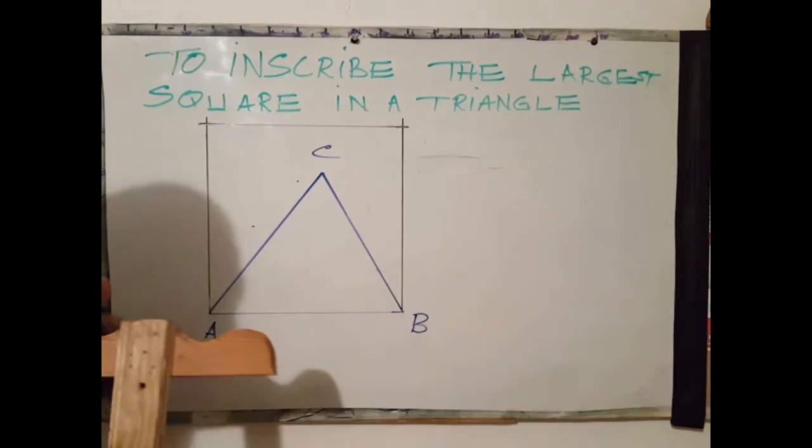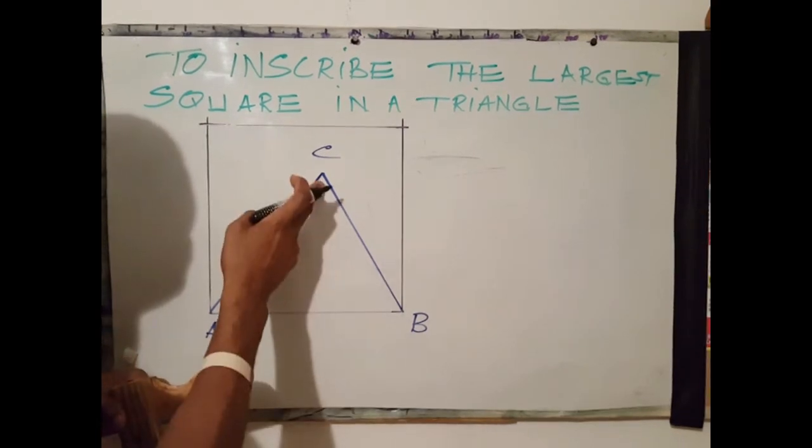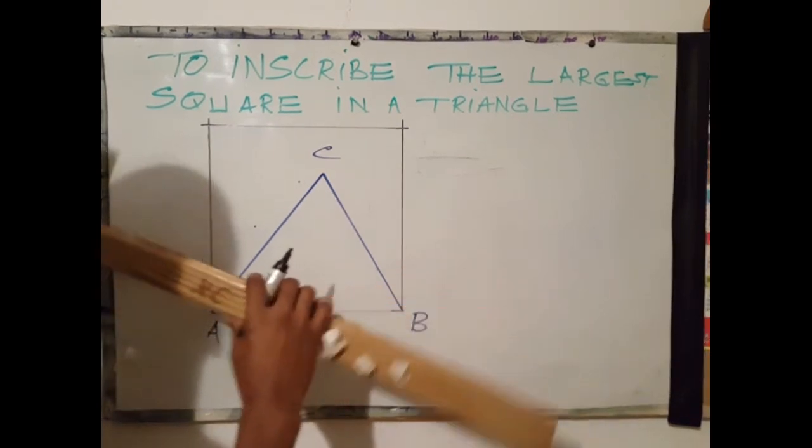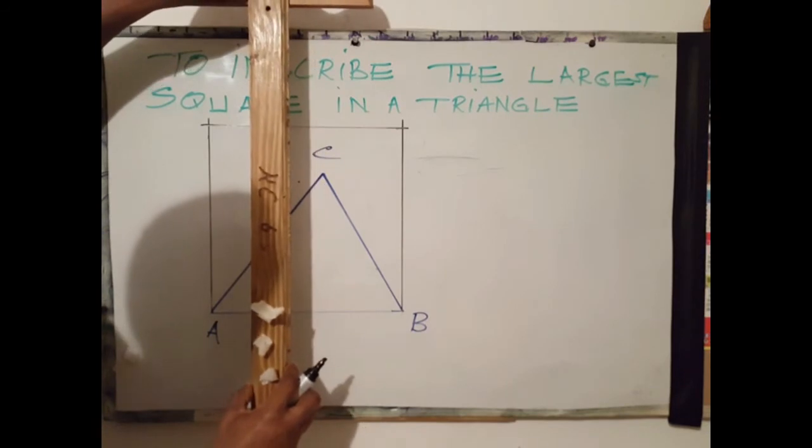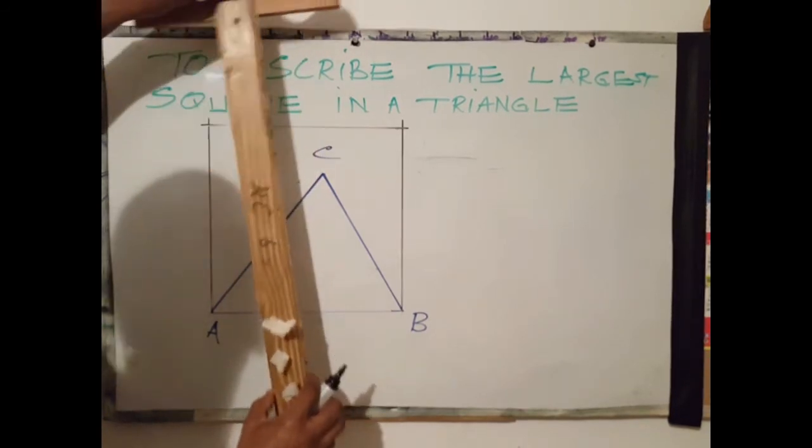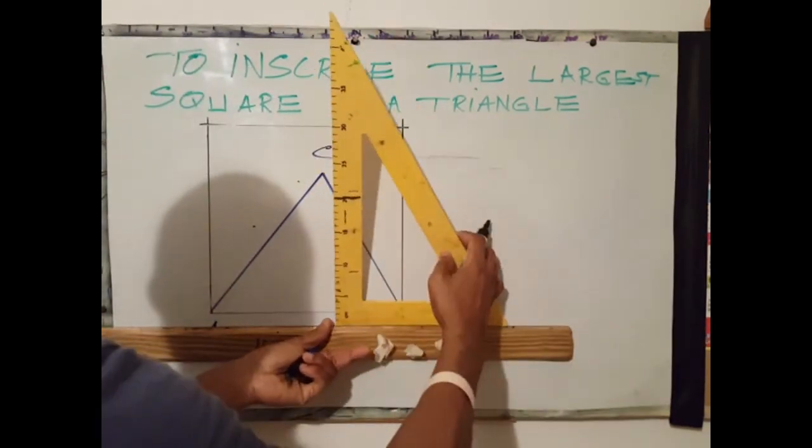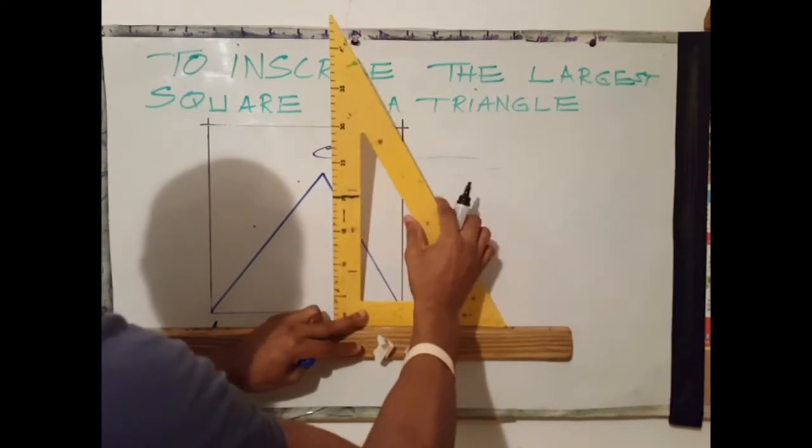Next step is to draw a vertical line through the apex of the triangle to touch line A-B. I'm going to use my T-square to draw the vertical line. It's recommended that students use your T-square and your set square.